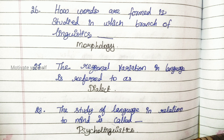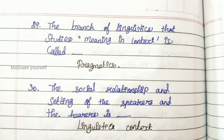Twenty-seven: the regional variation in language is referred to as dialect. Twenty-eight: the study of language in relation to mind is called psycholinguistics. Twenty-nine: the branch of linguistics that studies meaning in context is called pragmatics. Thirty: the social relationship and setting of the speakers and hearers is the linguistic context.